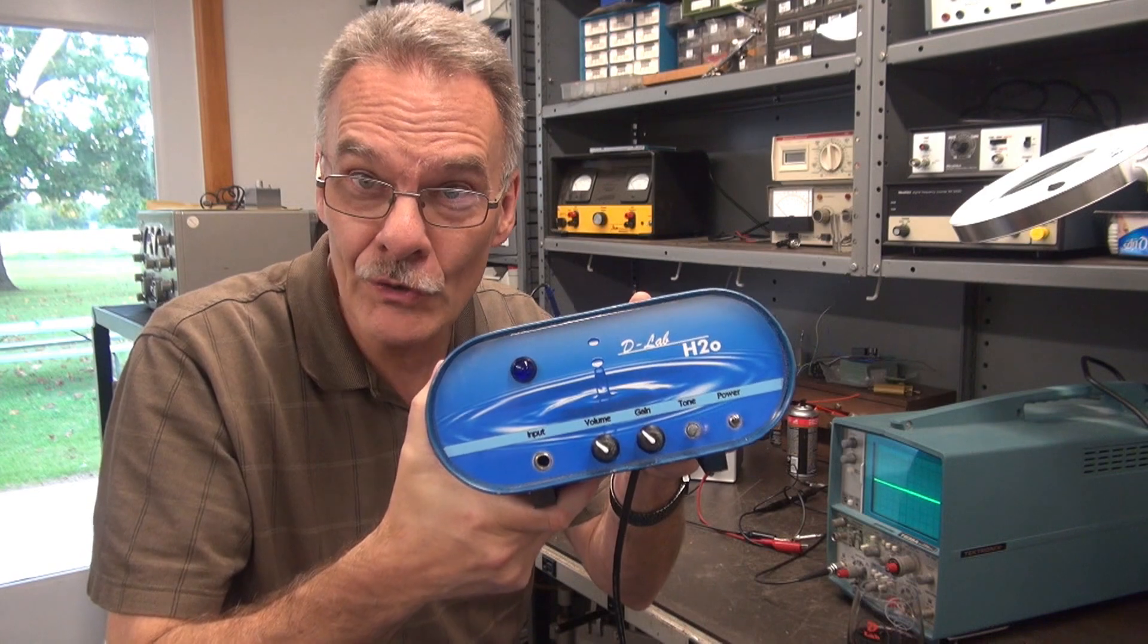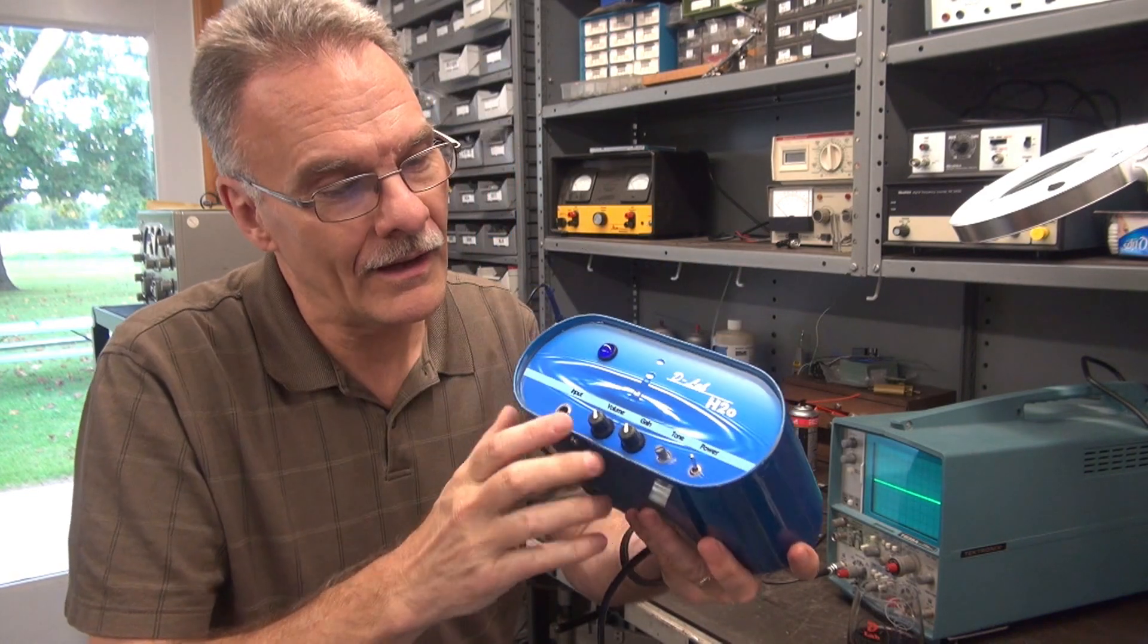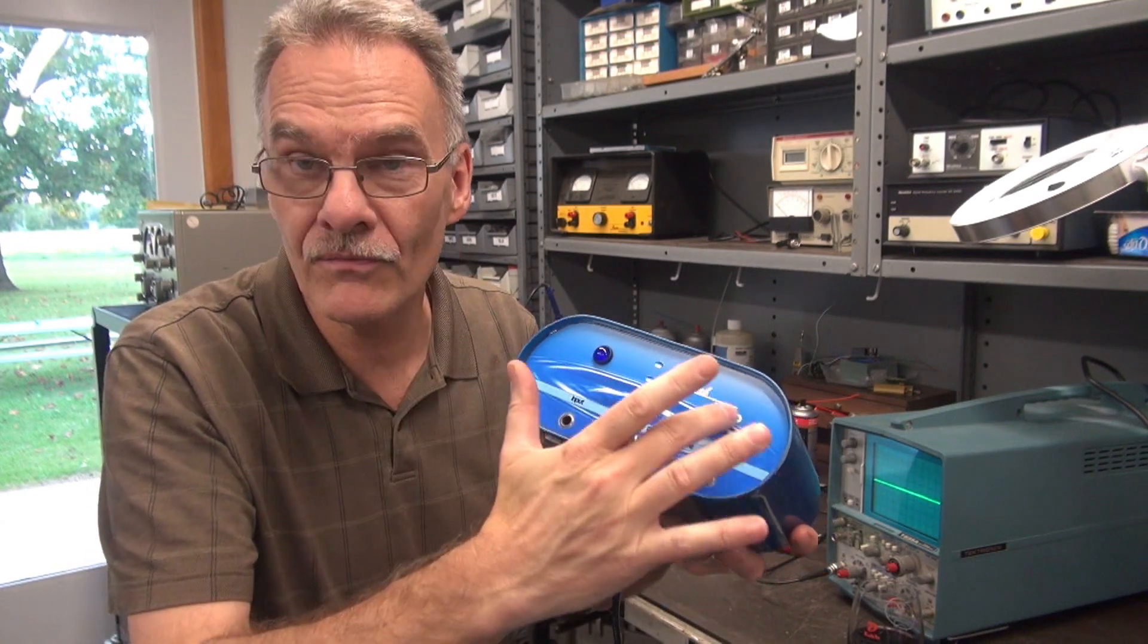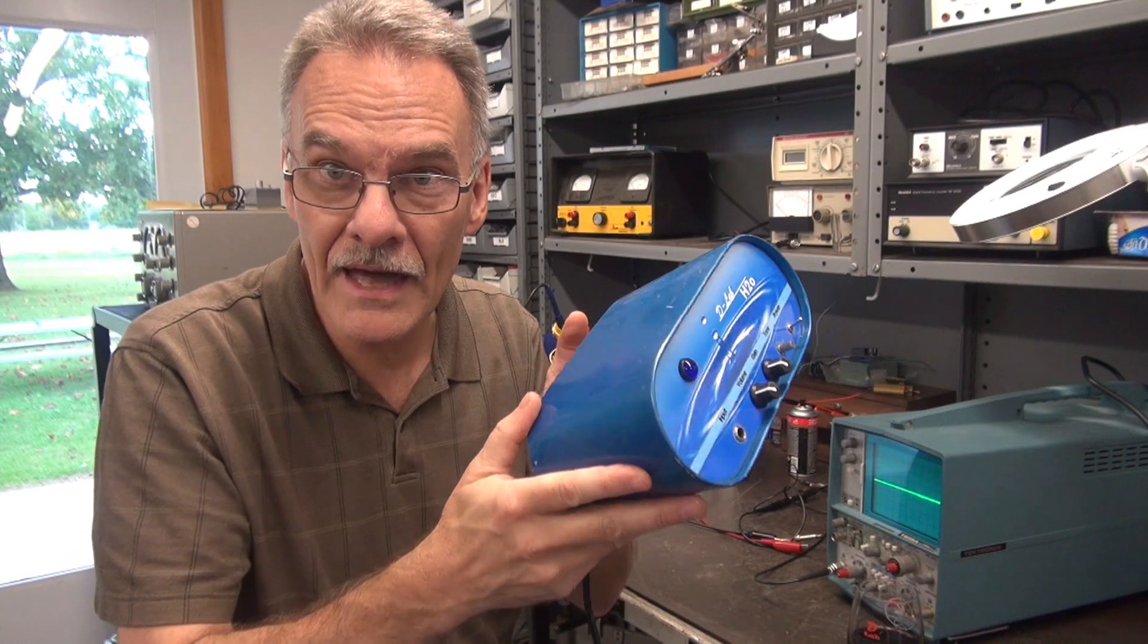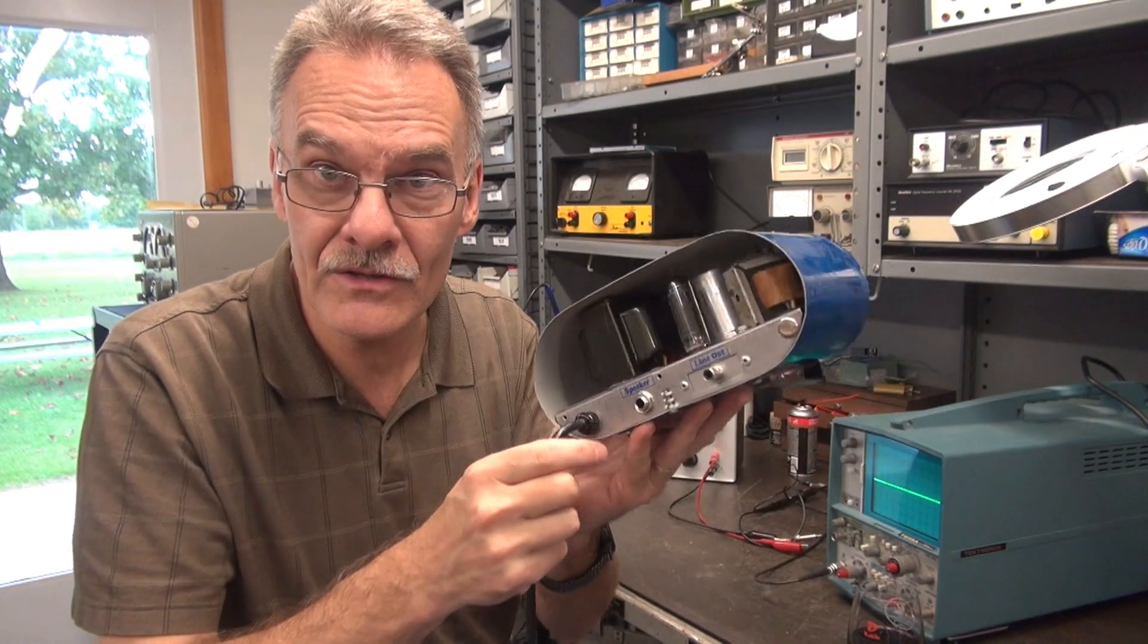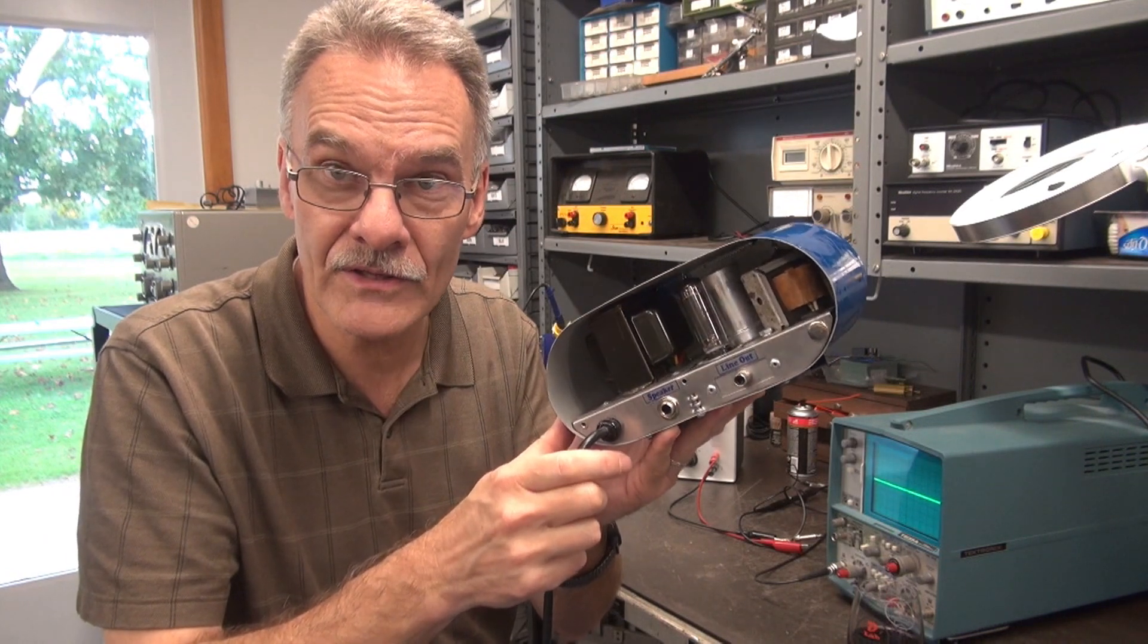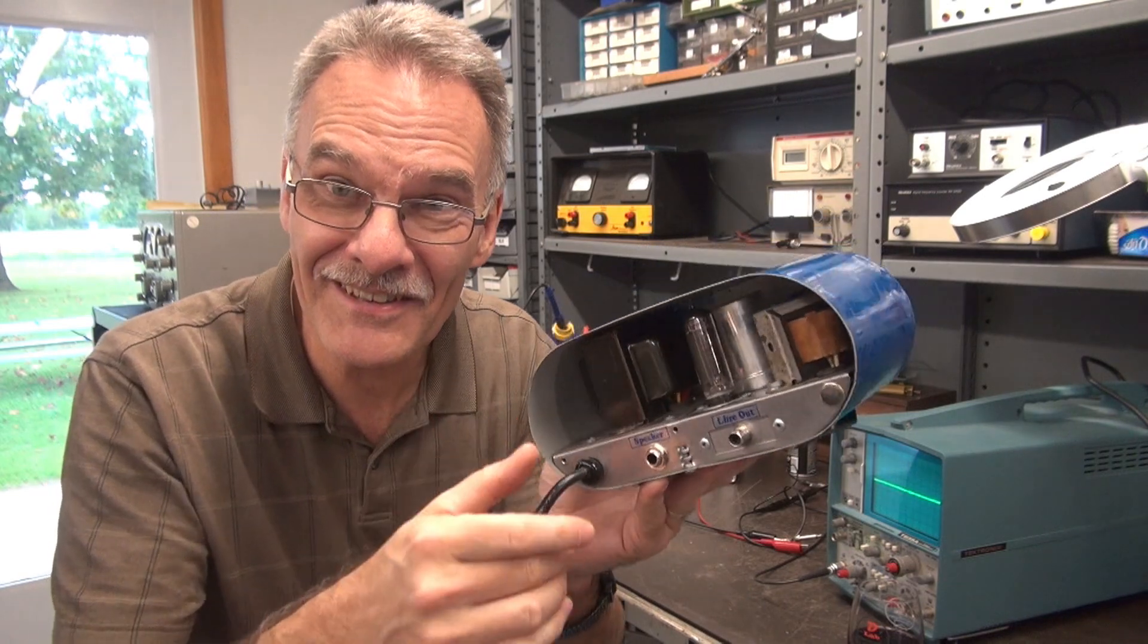So here it is, the D-Lab H2O. Very cool looking amp. I actually used a piece of photographic paper for the front panel, spray painted this cabinet with Testors blue paint. So it is a 6AQ5 Class A amp crammed in that little cabinet, a custom job.